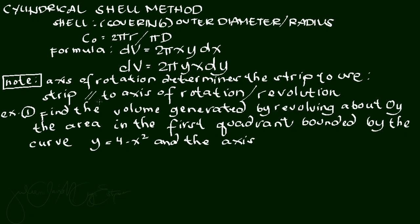Take note for the cylindrical shell method: the axis of rotation determines the strip to use. The strip is parallel to the axis of rotation or revolution. Note that in using the circular disc method, we determine the strip to use that is perpendicular, whereas here in the cylindrical shell method, the strip is parallel, not perpendicular.